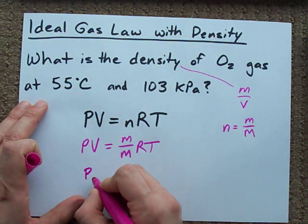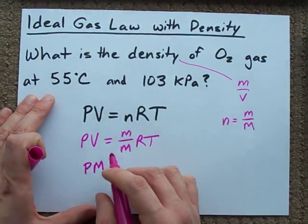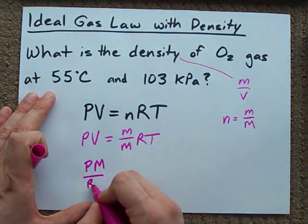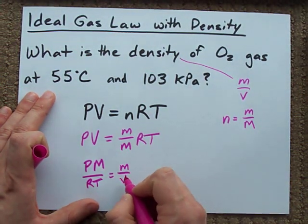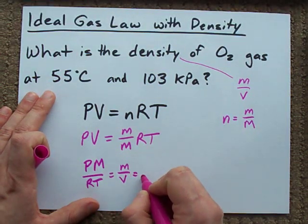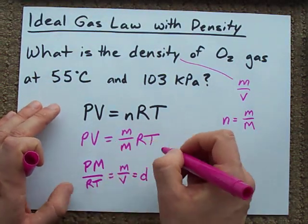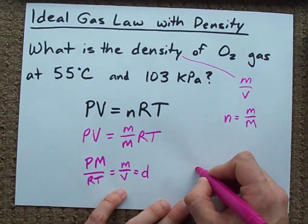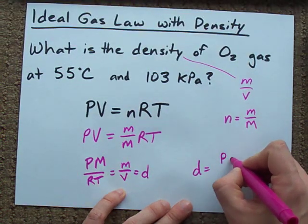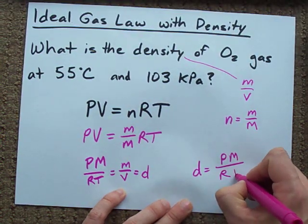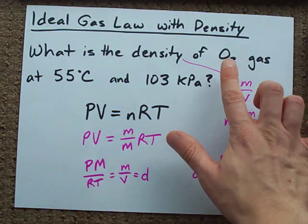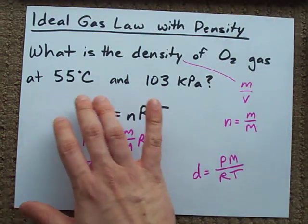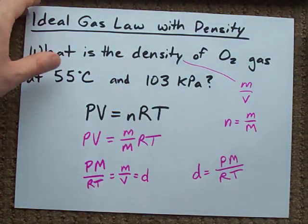Here's what I mean. P times the molar mass divided by RT gives me mass over volume. Mass over volume is density. And so my equation is density equals pressure times molar mass divided by RT. We can now use this equation to find the density of oxygen at 55 Celsius and 103 kilopascals.